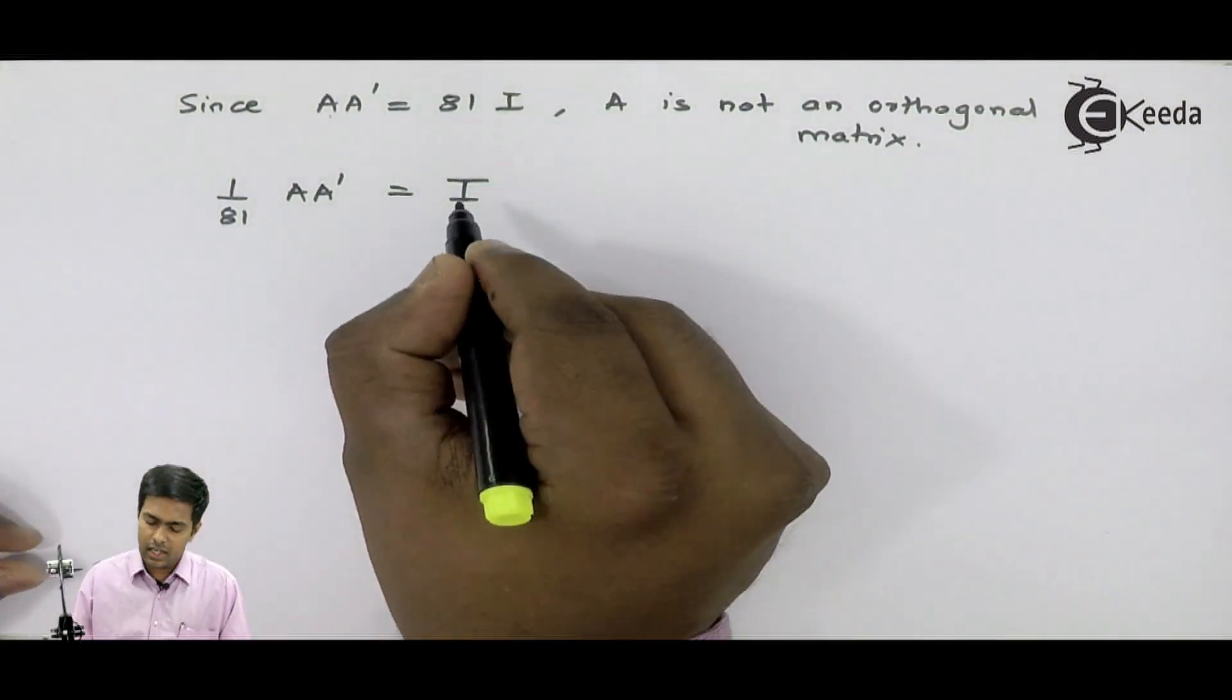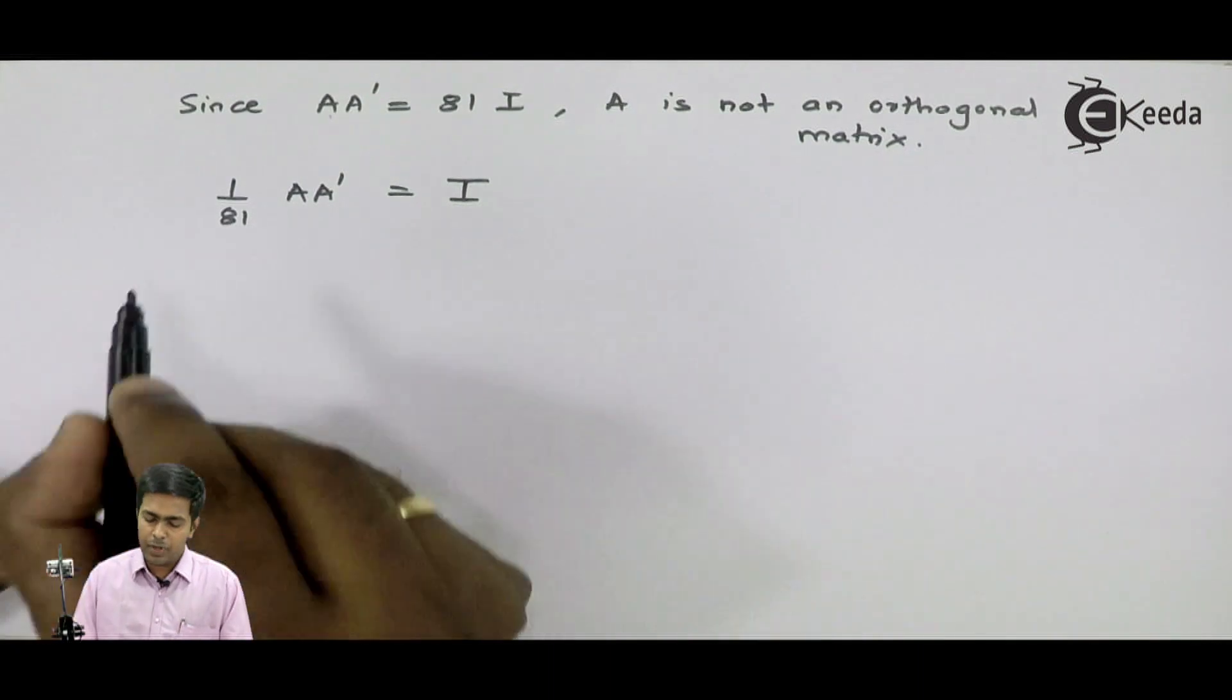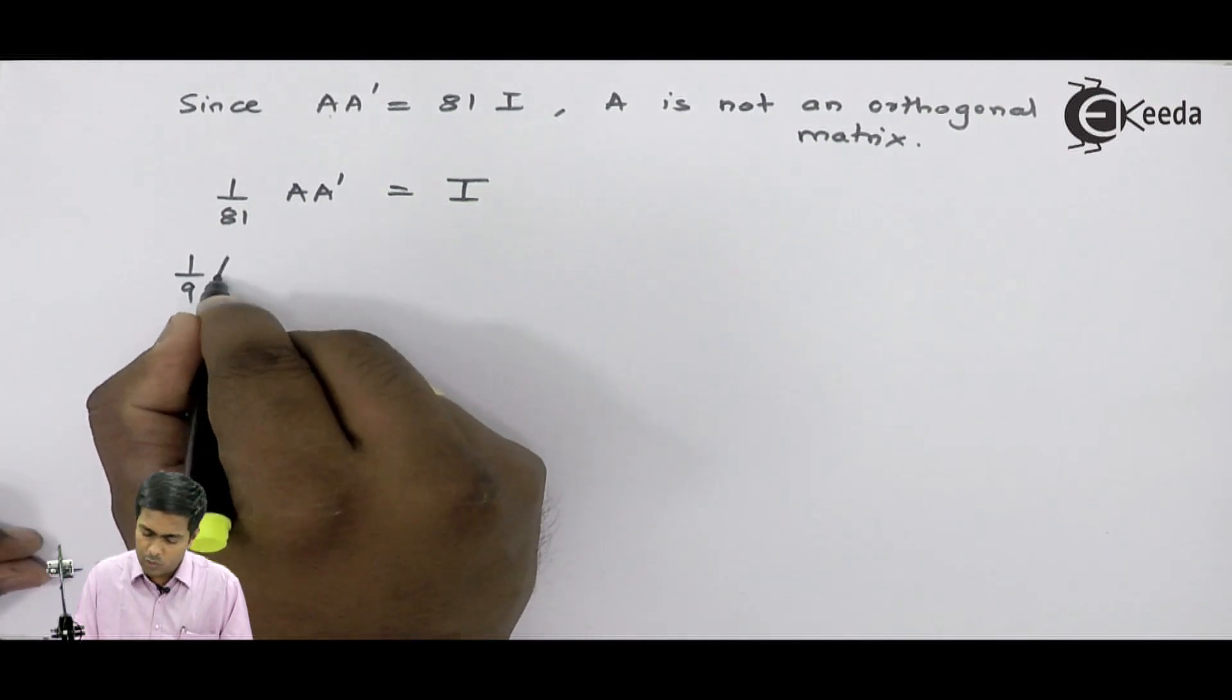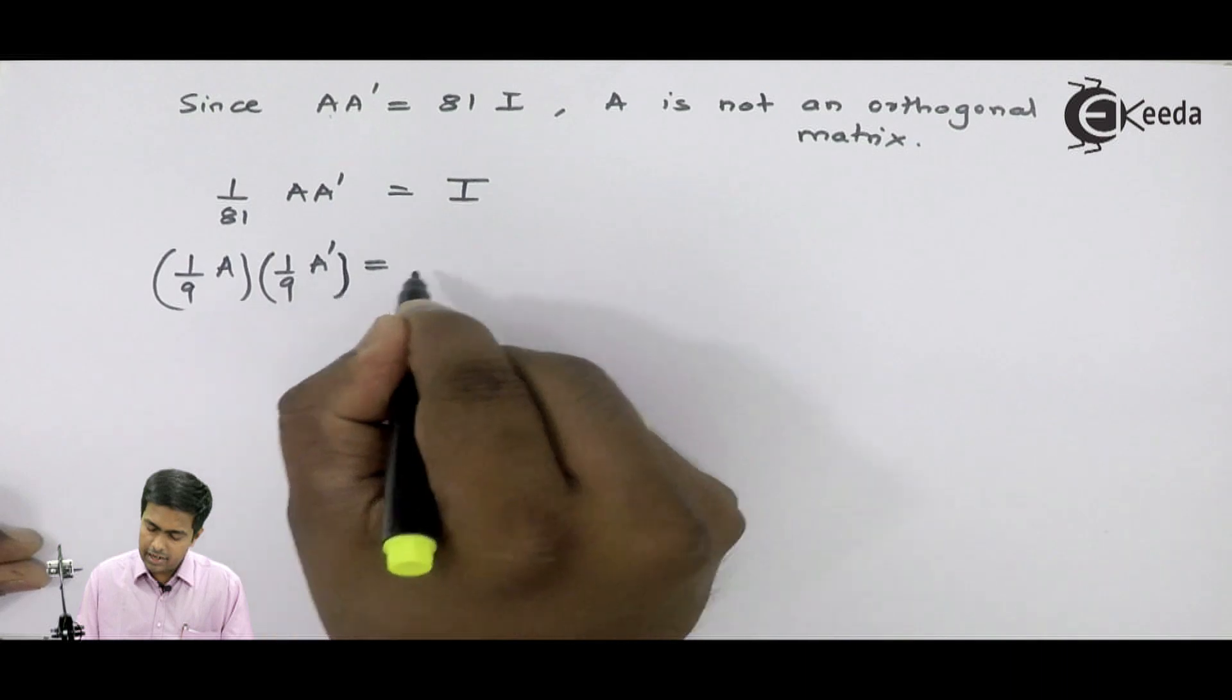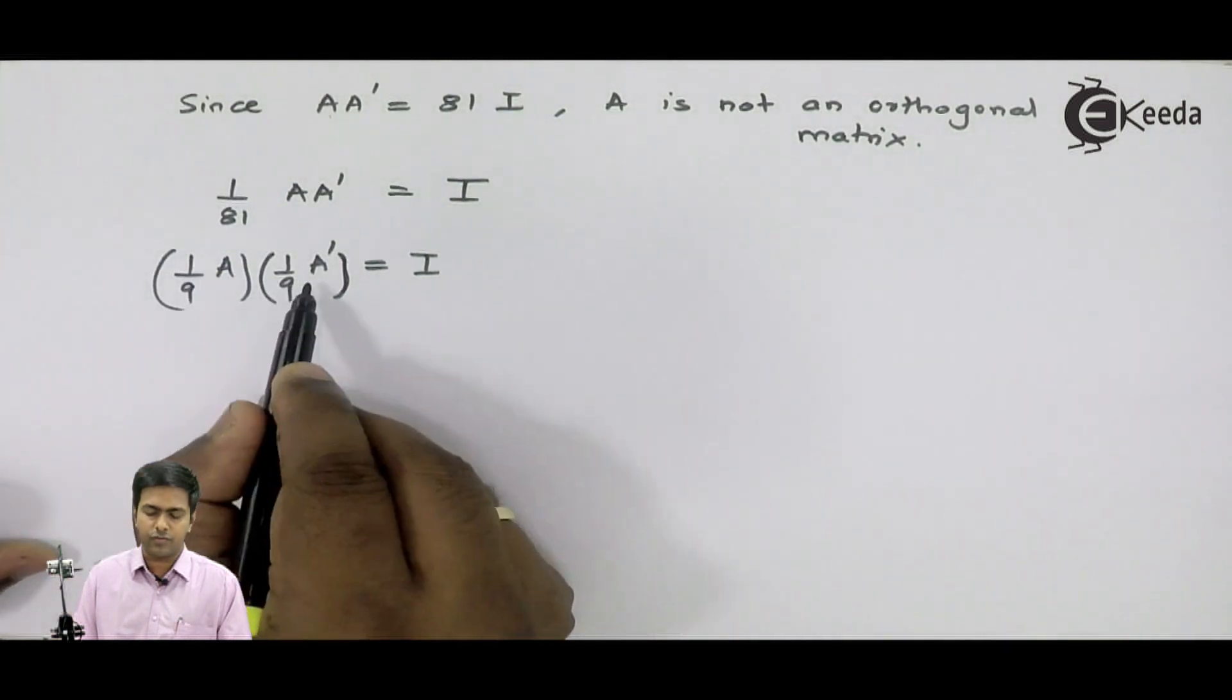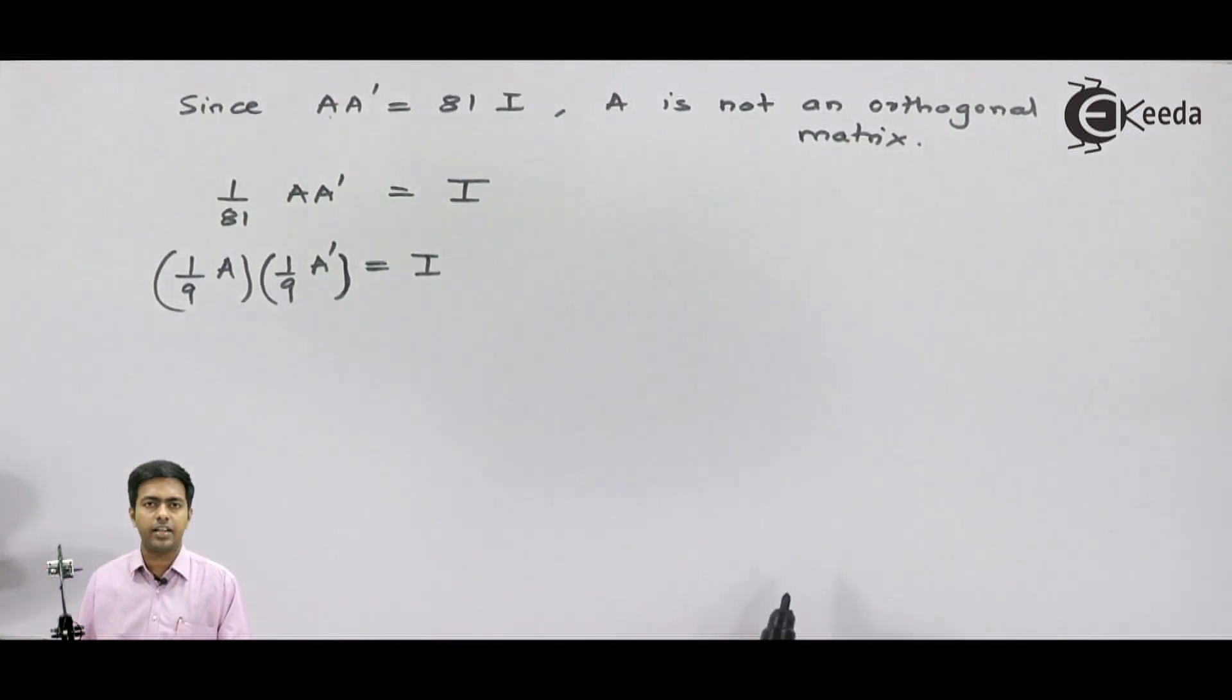Now if I want this A as an orthogonal matrix, then I have to prove A into A dash as I. What I will do is split this 1 upon 81 into 2 terms, that is 1 by 9 and 1 by 9. I will give this 1 by 9 to A and another 1 by 9 to this A dash. If you will observe now, we are getting it as an orthogonal matrix, because the multiplication of these two terms is giving us the identity matrix. Then yes, we can say that A can be converted into an orthogonal matrix.